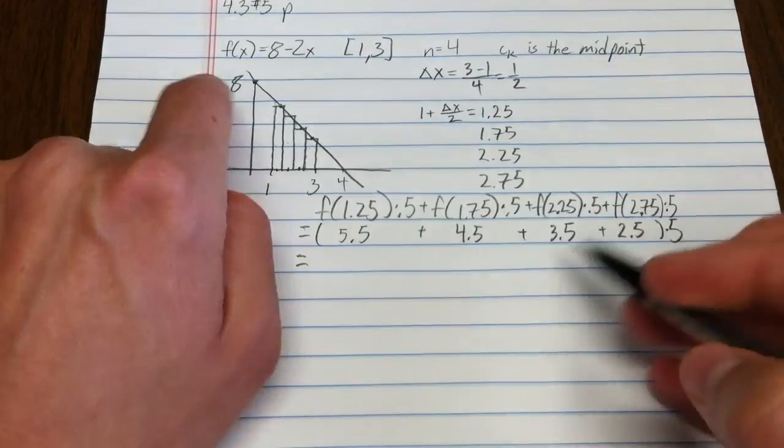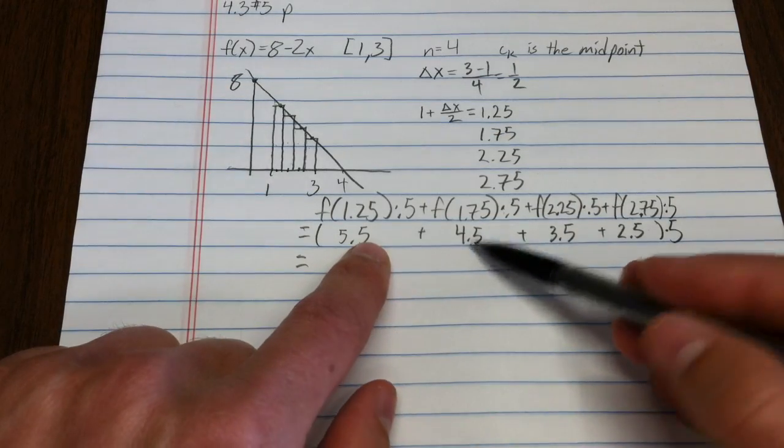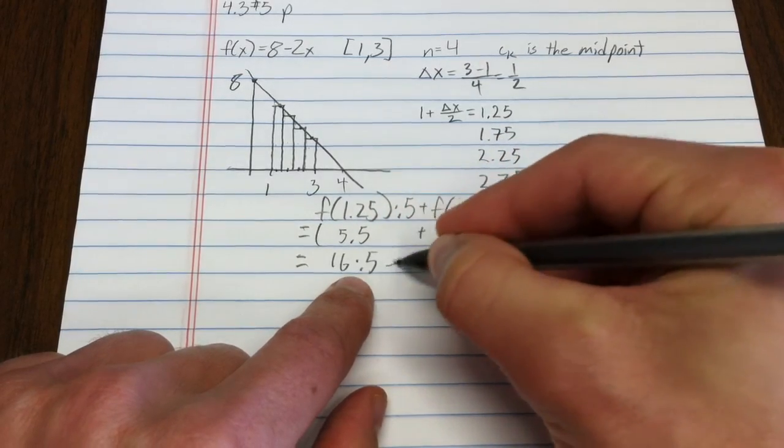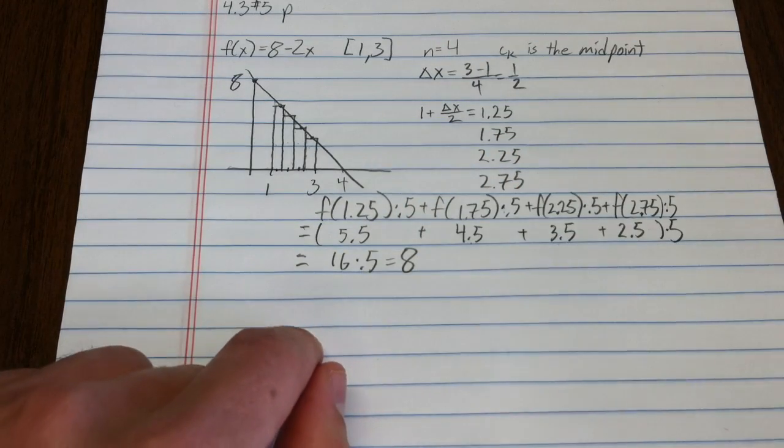So adding all those up, let's see, those two add to 10, those two add to 6, so we're at 16 times 0.5, or 8. Isn't that swell?